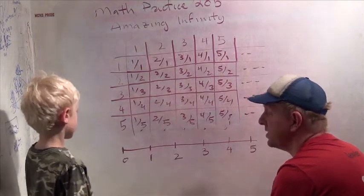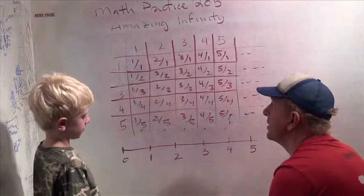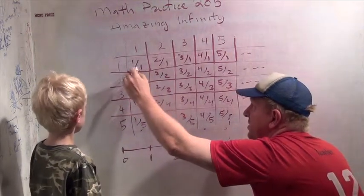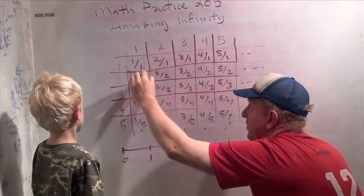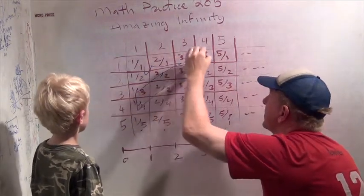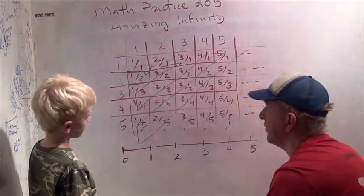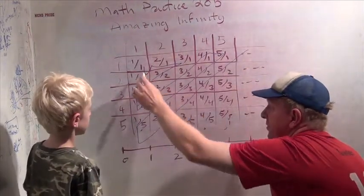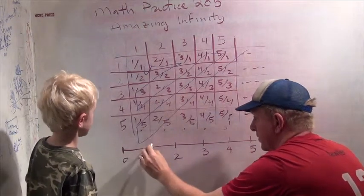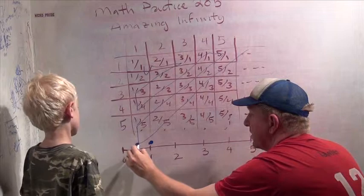So the neat thing is we can use the same Hilbert's Hotel argument to list these fractions in order. So we're going to snake through like this. And we're going to hit every fraction doing it that way. And then we can see, here's 1 over 1, which is just 1.